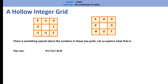Top row: if we add 4, minus 1, minus 3 — this is a horizontal row, we call it a row — so the top row is 4, minus 1, minus 3, and the sum is 0. Bottom row: minus 1, minus 1, plus 2 — sum is 0.